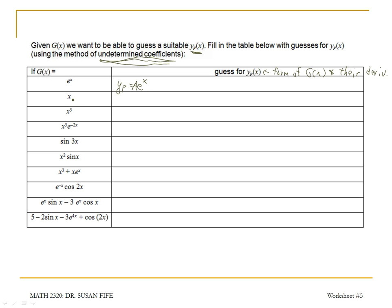If my g of x is x, then g prime is 1 and g double prime is 0, so that drops out. The forms of the derivative of x would include just the constant 1. So my particular solution in this case would be a constant A times x plus another constant B times 1 — or just Ax plus B. C times 0 would drop out, so this one is just Ax plus B.